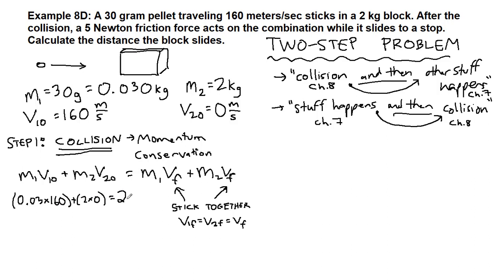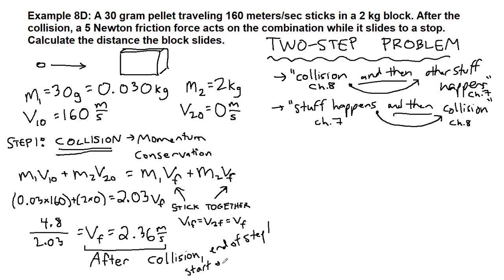If we add those masses together, we have 2.03 Vf. So this 2 times 0 goes away on the left, we just have 4.8. So then we'll divide both sides by 2.03 to get that velocity by itself, and that's going to give us 2.36 meters per second. So that is the speed immediately after the collision but before things start to slide. After collision, so end of step one but the start of step two.